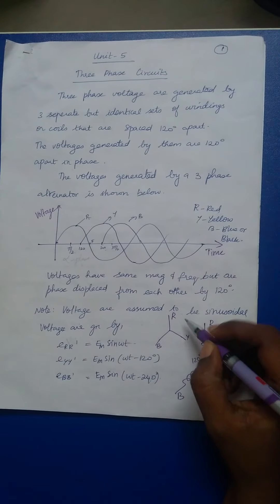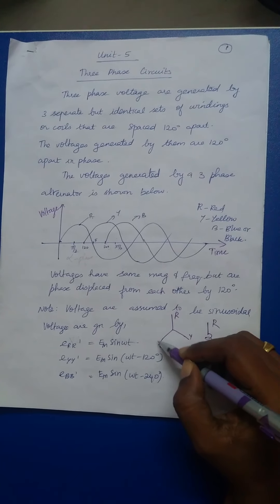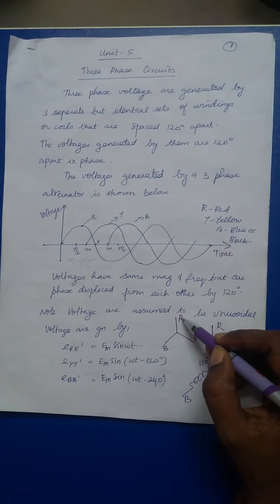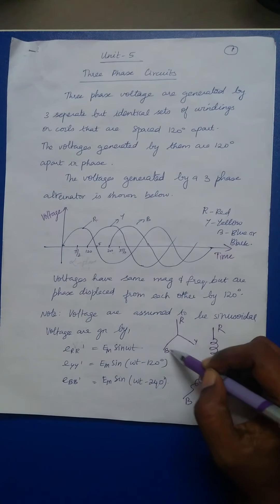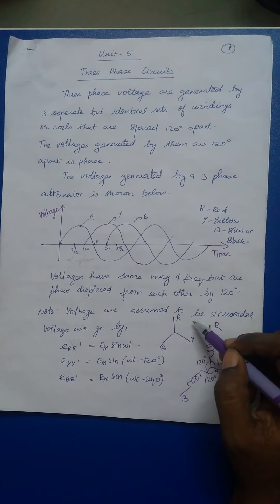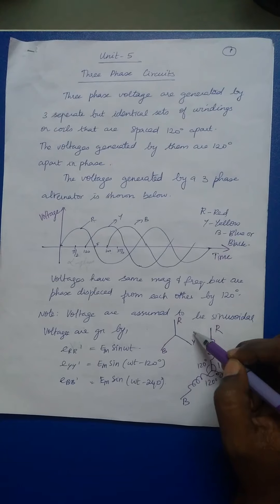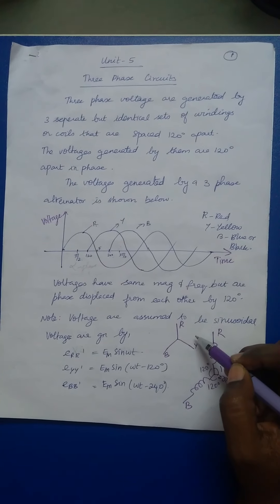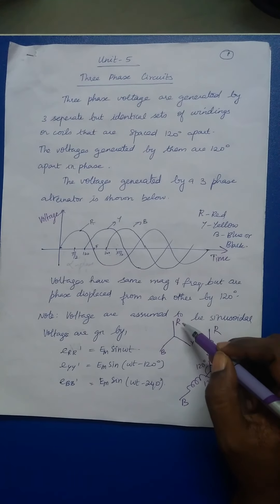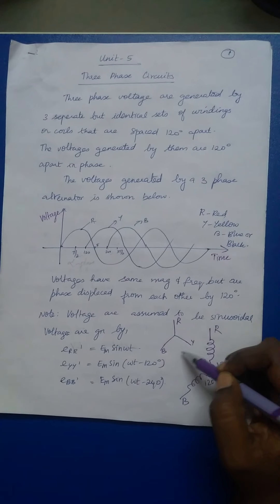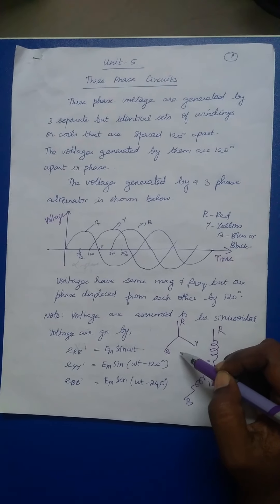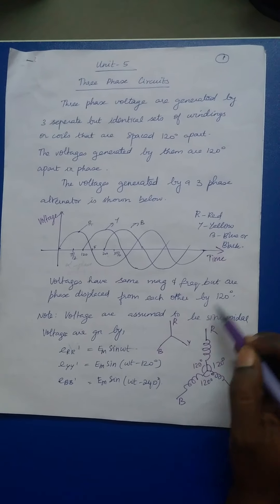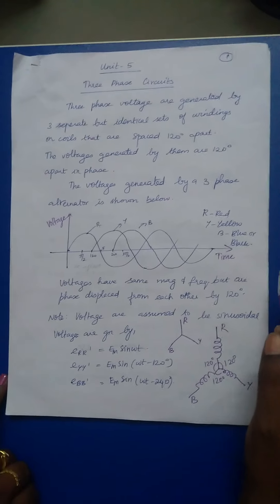The sequence can either be R, Y, B in the clockwise direction, or it can be R, B, Y in the anticlockwise direction. As per the direction, we can term it as positive sequence and negative sequence. If it is R, Y, B then the sequence followed is positive sequence, and if it is R, B, Y then the sequence is negative sequence.